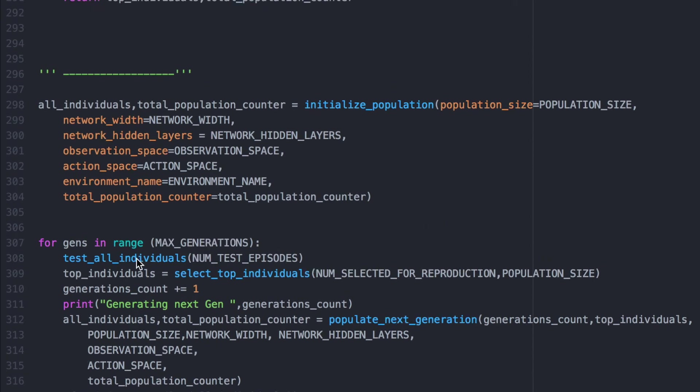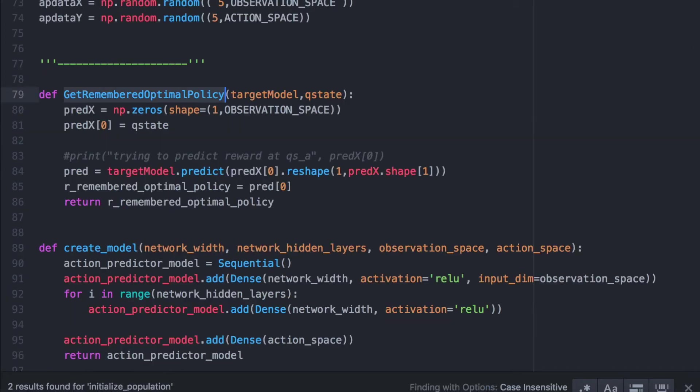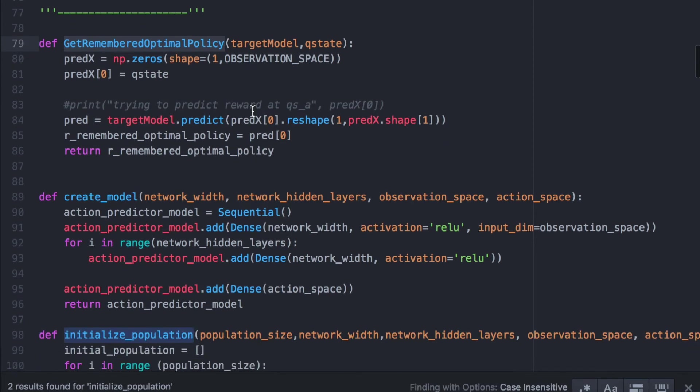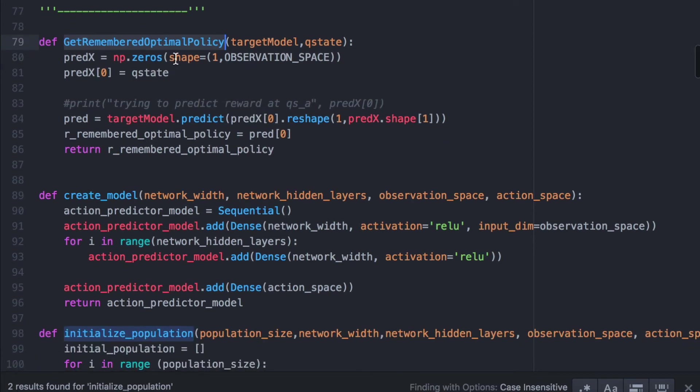Then, let's create a function that initializes the first individuals with random features. We will also create a function that passes a state to an individual's neural network and retrieves what it thinks is the best action in this situation state. Notice the parameters of this function are mostly constants that we declared earlier.